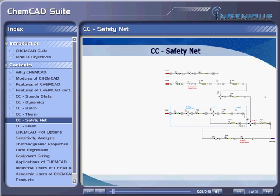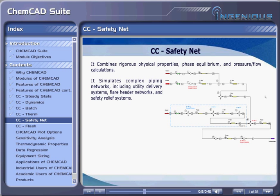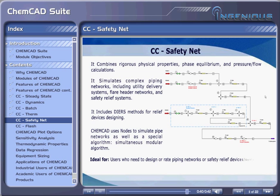CC Safety Net. It combines rigorous physical properties, phase equilibrium, and pressure flow calculations. It simulates complex piping networks including utility delivery systems, flare header networks, and safety relief systems. It includes Dyer's methods for relief device designing. ChemCAD uses nodes to simulate pipe networks as well as a special simultaneous modular algorithm. It is ideal for users who need to design or rate piping networks or safety relief device systems.